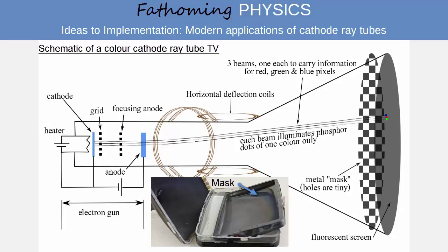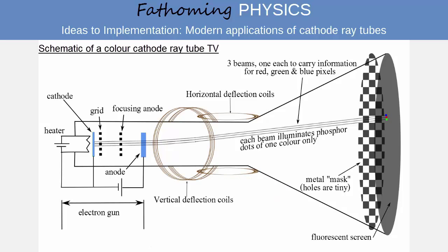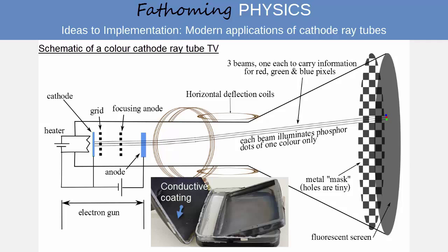Once the electron beams have hit the screen and caused the phosphor dots to glow, and so producing the image seen from the front of the TV, they flow through a conductive coating on the inside of the tube back to complete the circuit.